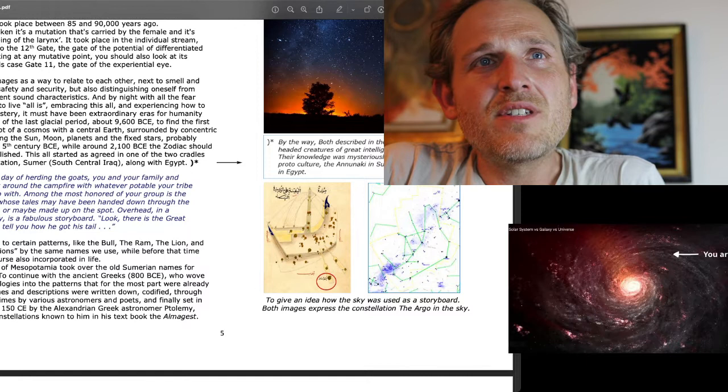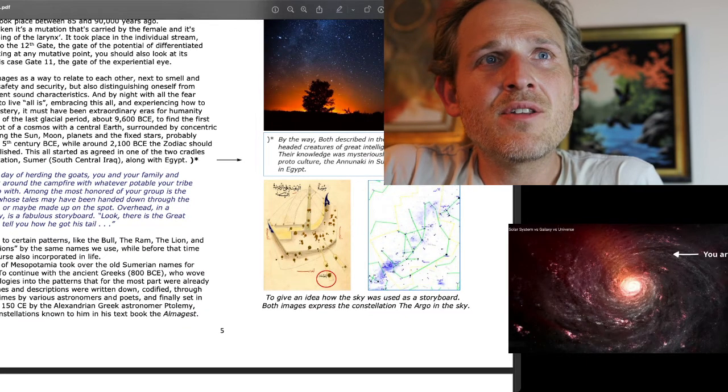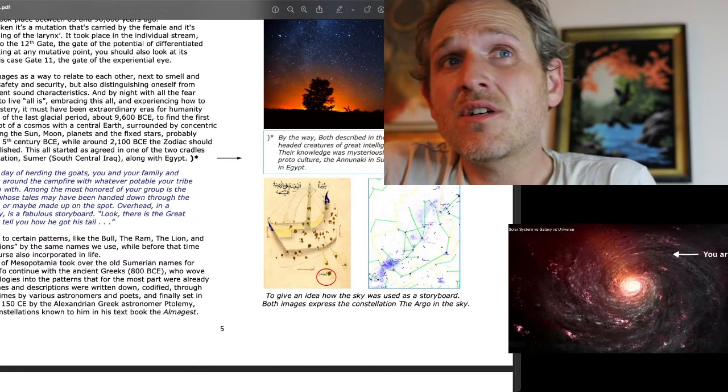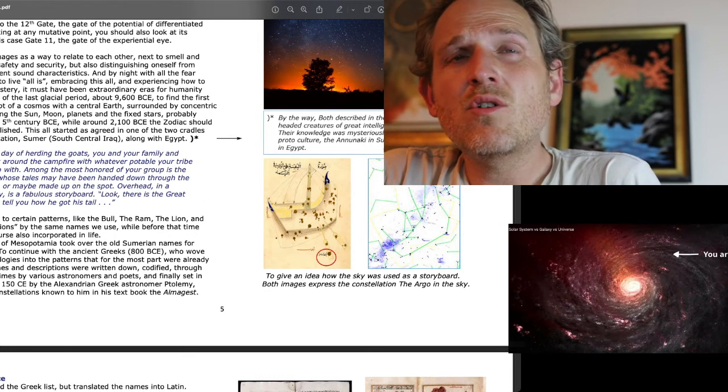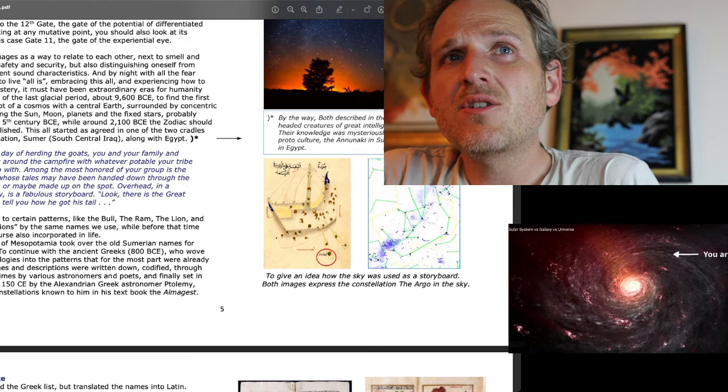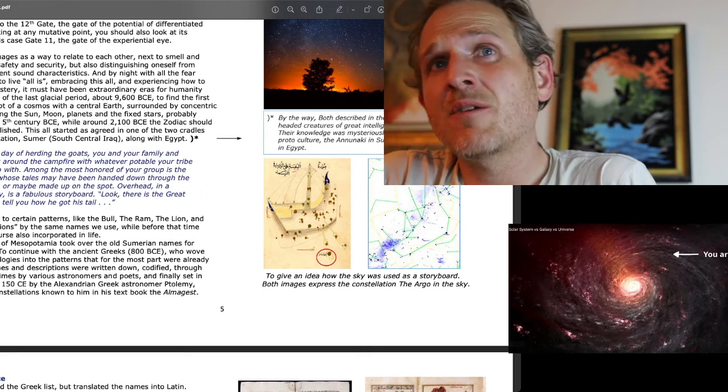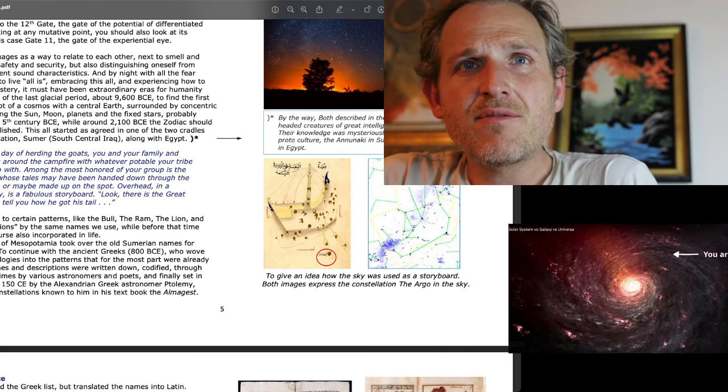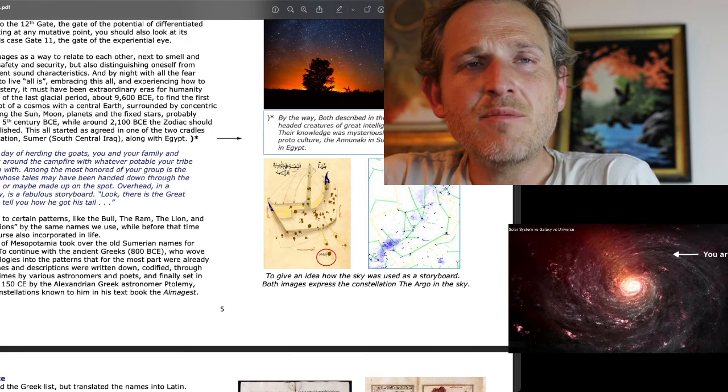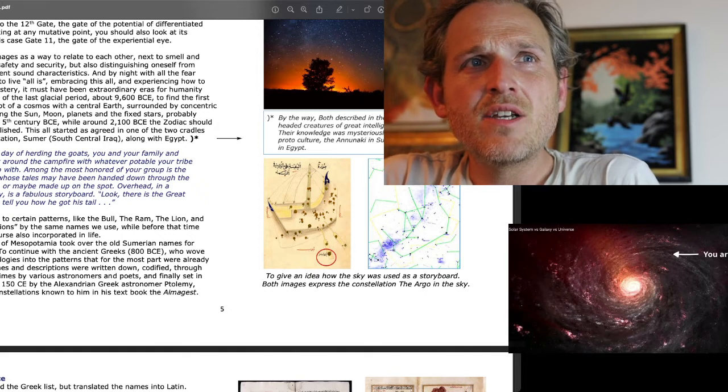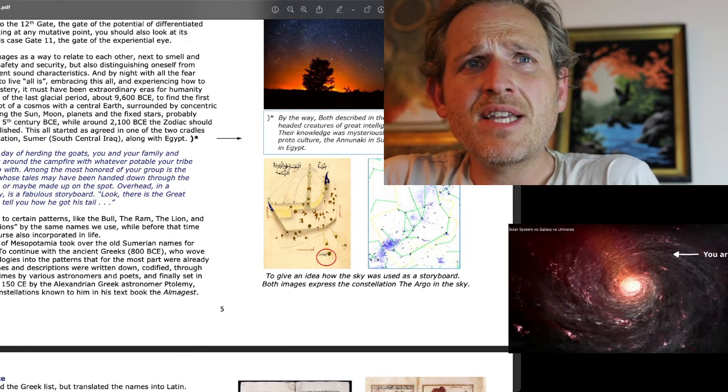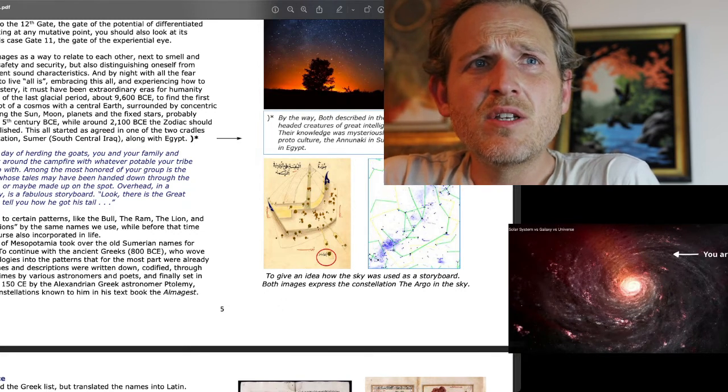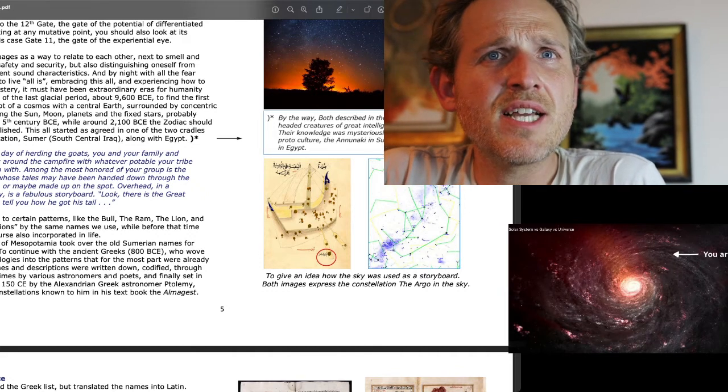They had names to certain patterns, like the bull, the ram, the lion, and other constellations by the same names we use, while before that time, stars were, of course, also incorporated in life. The later people of Mesopotamia took over the old Sumerian names for those patterns. To continue with the ancient Greeks, 800 years before Common Era, who wove their own mythologies into the patterns that, for the most part, were already there. Their names and descriptions were written down, codified, through classical Greek times by various astronomers and poets, and finally set in cement in about 150 Common Era by the Alexandrian Greek astronomer Ptolemy, who listed 48 constellations known to him in his textbook, The Almagest.